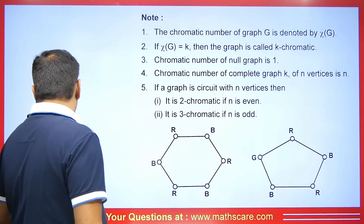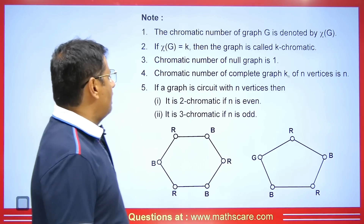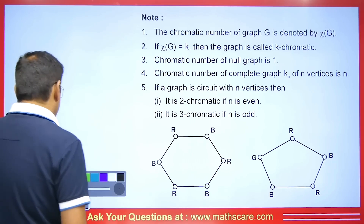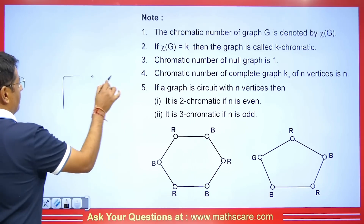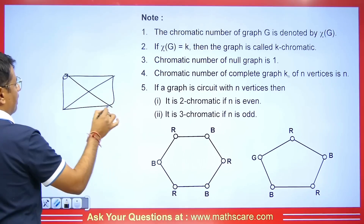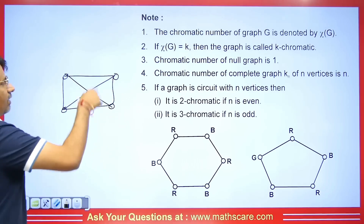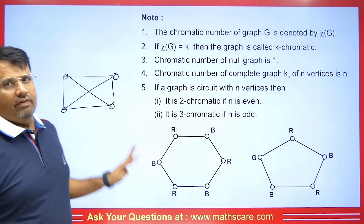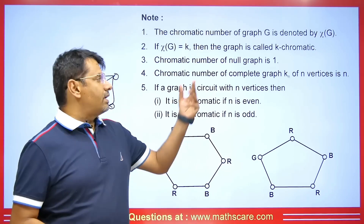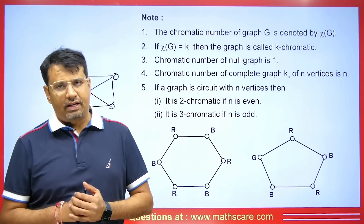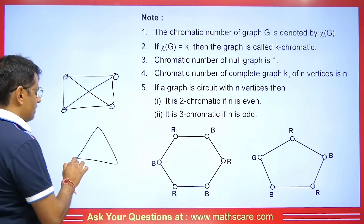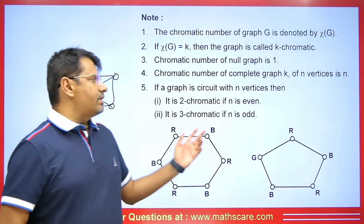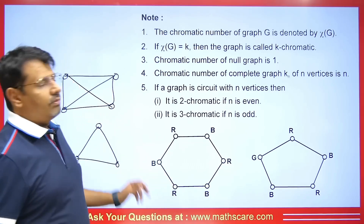The chromatic number of a complete graph K_n of n vertices is n. For example, in a complete graph where each vertex is connected to every other vertex and we are using four colors, the chromatic number is four — it is a four chromatic graph. Similarly, for a triangle, each vertex is connected to the other, giving three vertices each colored differently, with chromatic number three.